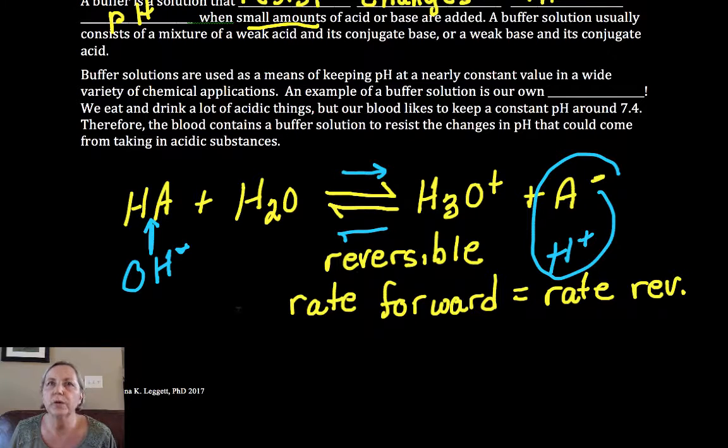Buffers are so important especially in our bodies and chemical reactions. Our blood is buffered to maintain pH. Our blood has to keep around pH 7.4 so anytime we add acidic things into our body our blood has to be able to resist any changes when it takes in any components of those acidic substances.